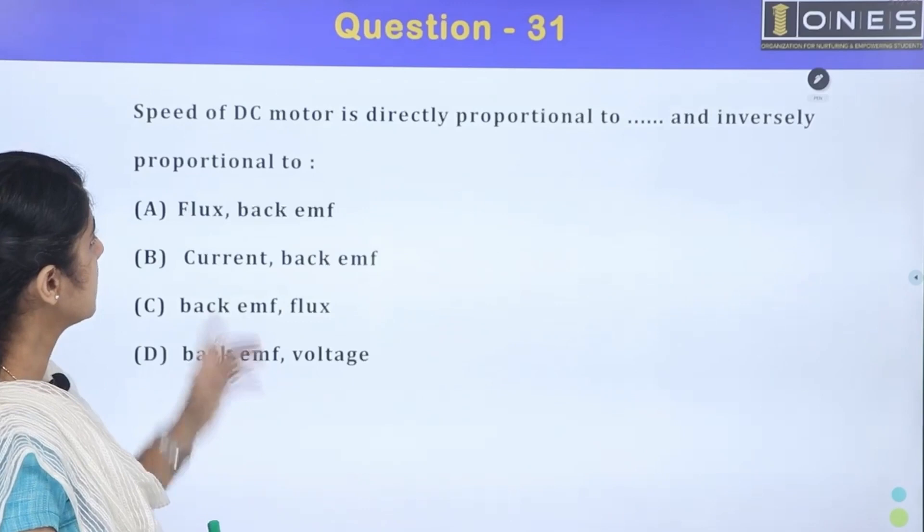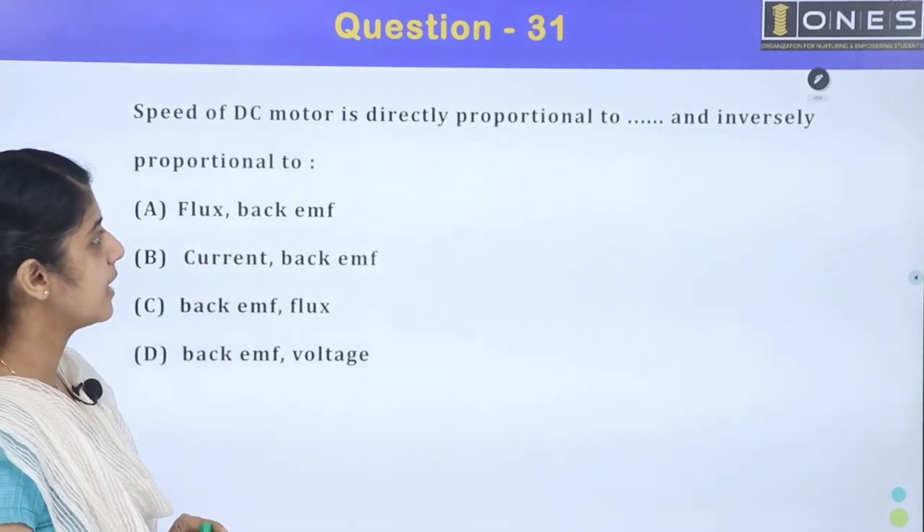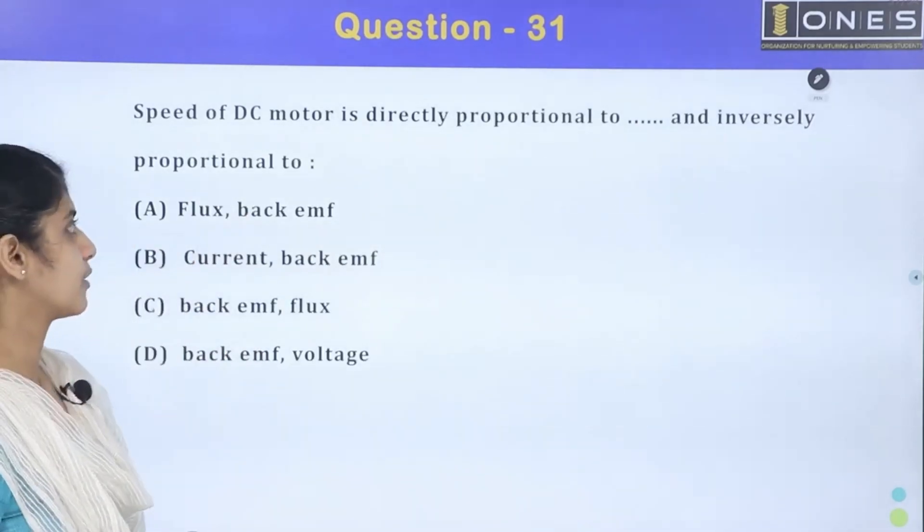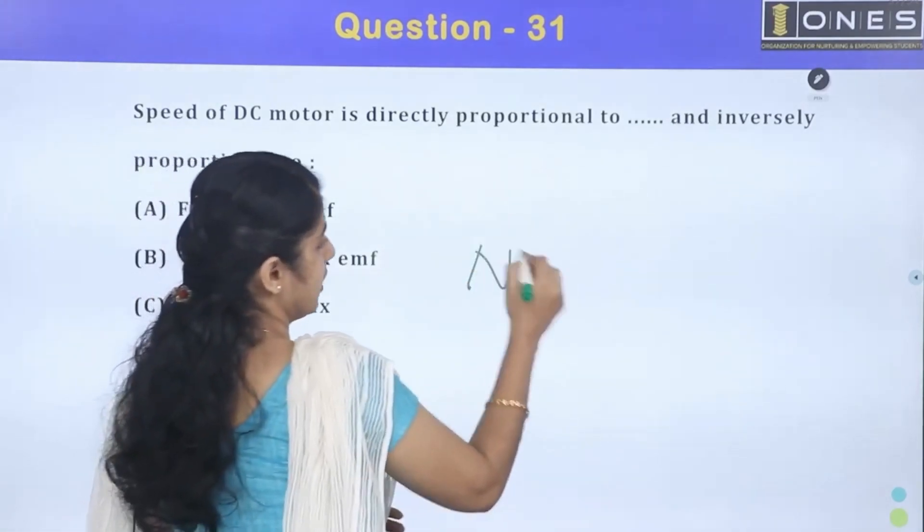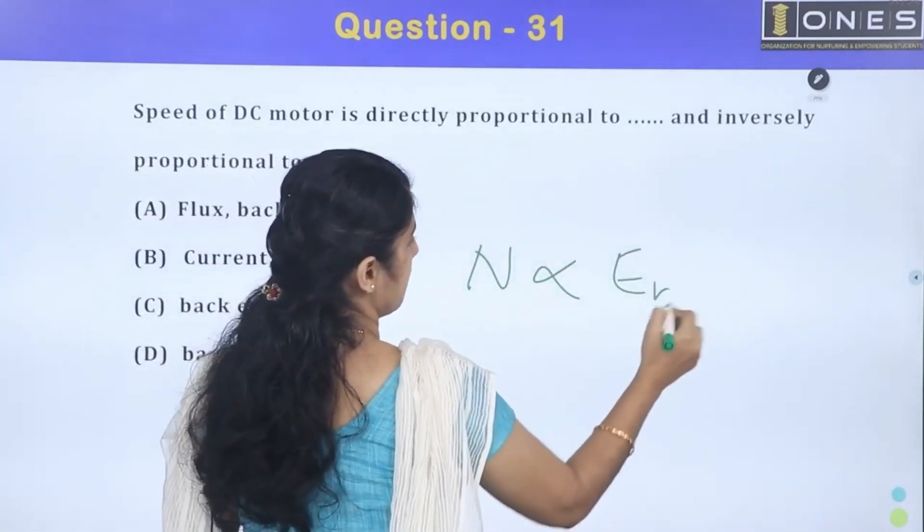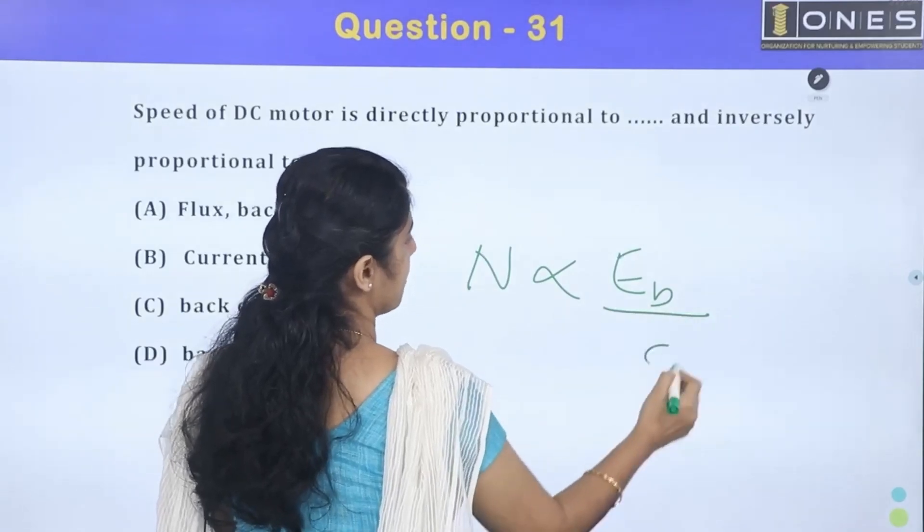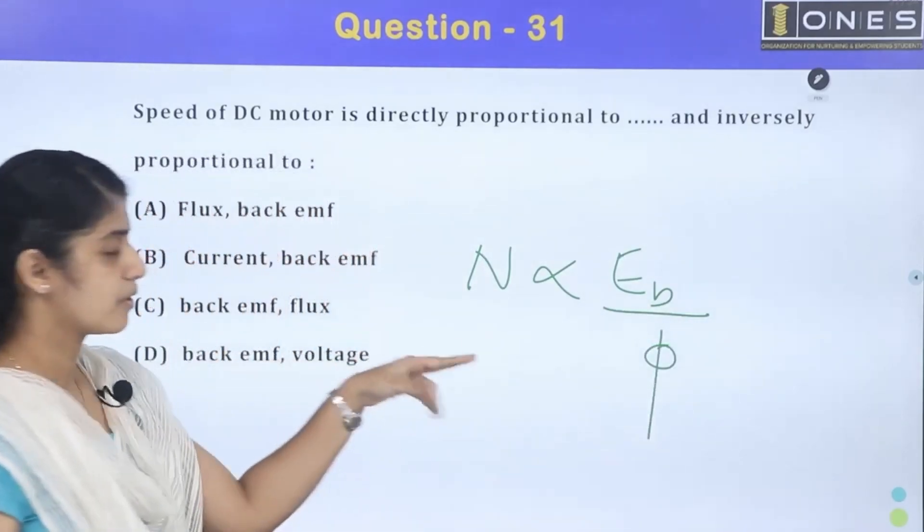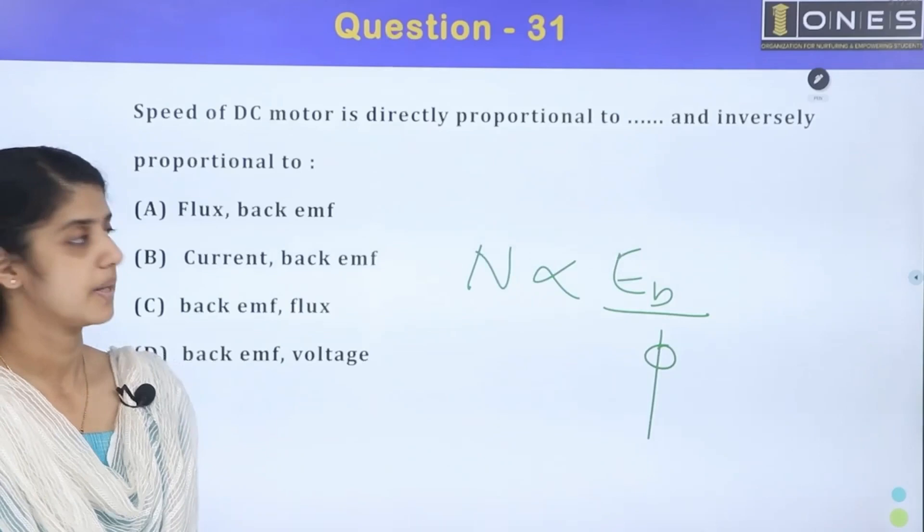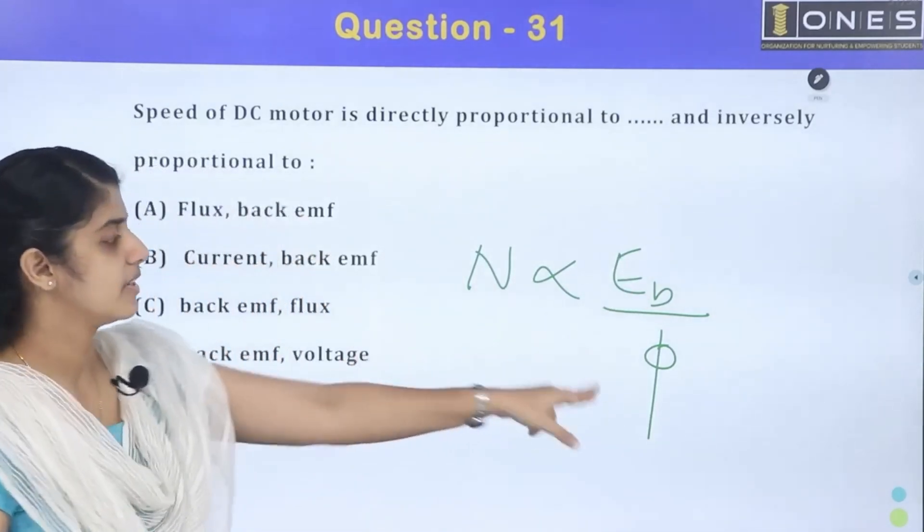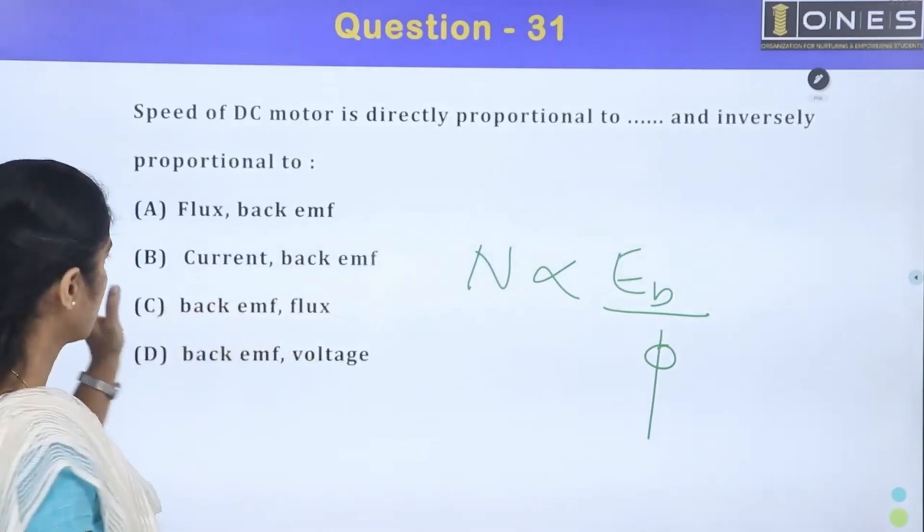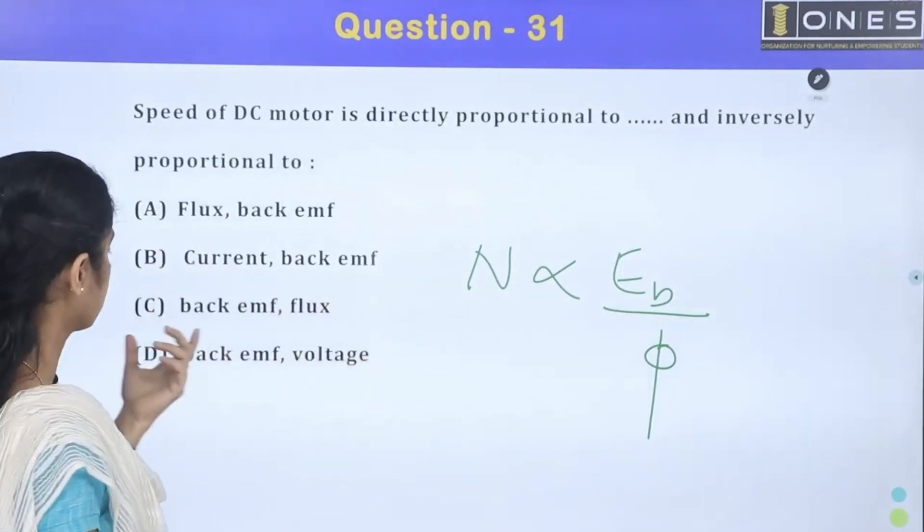Speed of a DC motor is directly proportional to dash and inversely proportional to... Speed of a motor, you know what we have to say? Speed of a motor is N proportional to Eb inversely proportional to flux. N is proportional to Eb by flux. This is directly proportional to back EMF Eb and inversely proportional to flux.